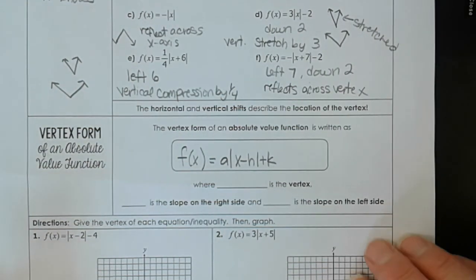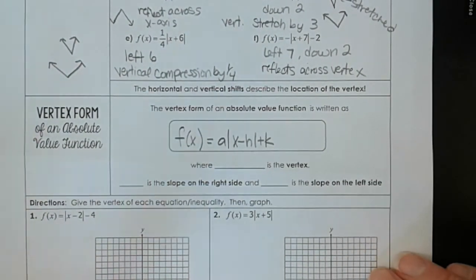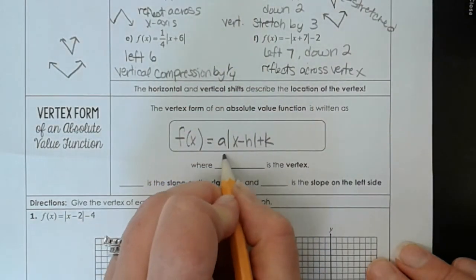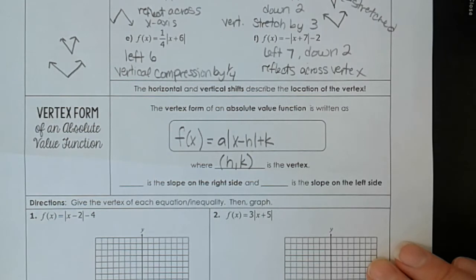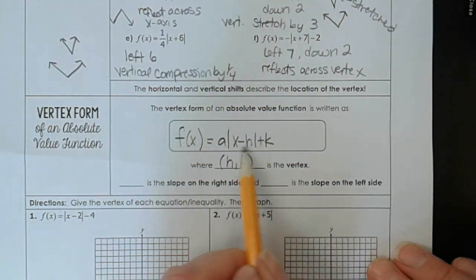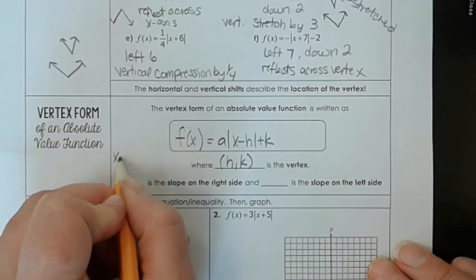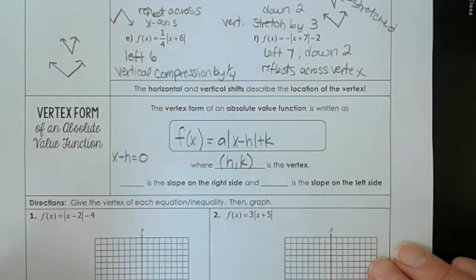So this is the vertex form, and different letters in here tell us something about it. So h and k are the vertex. And you can verify that, because when we want to find the vertex, we set what's inside of the absolute values equal to zero. We say x minus h equals zero. And we solve for x.